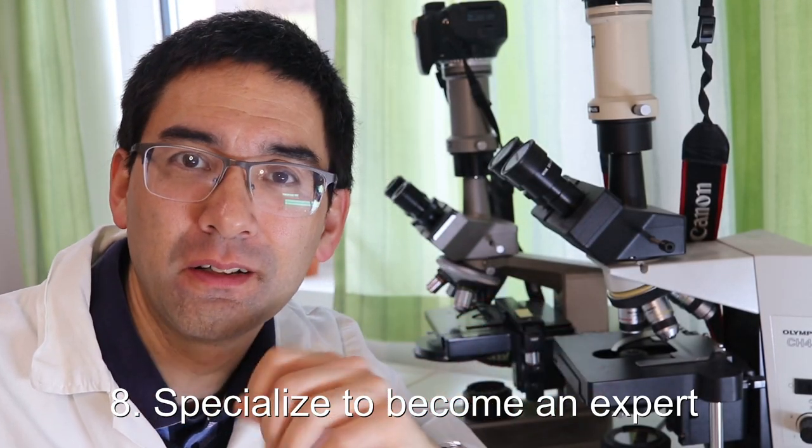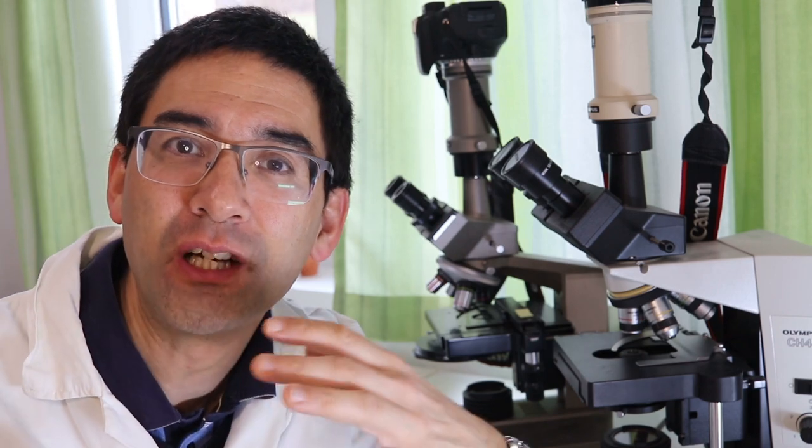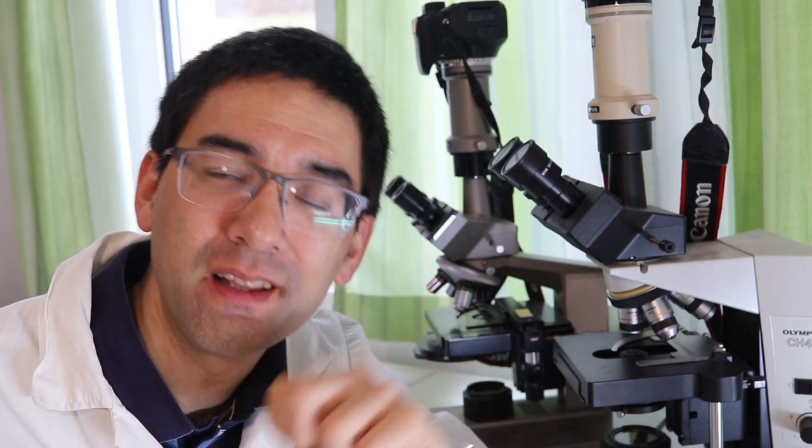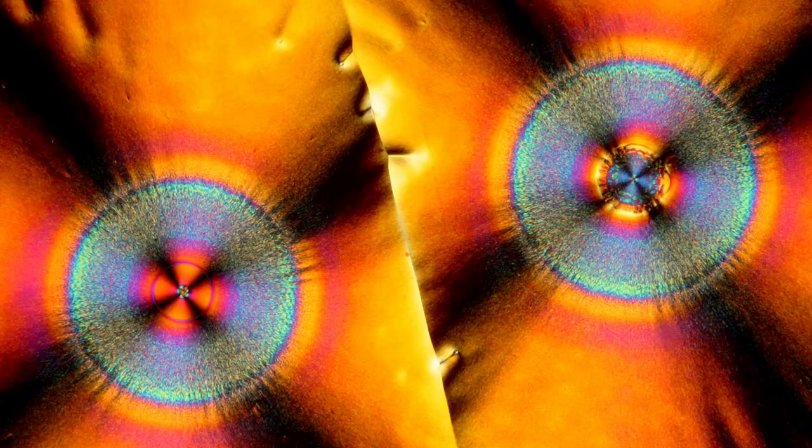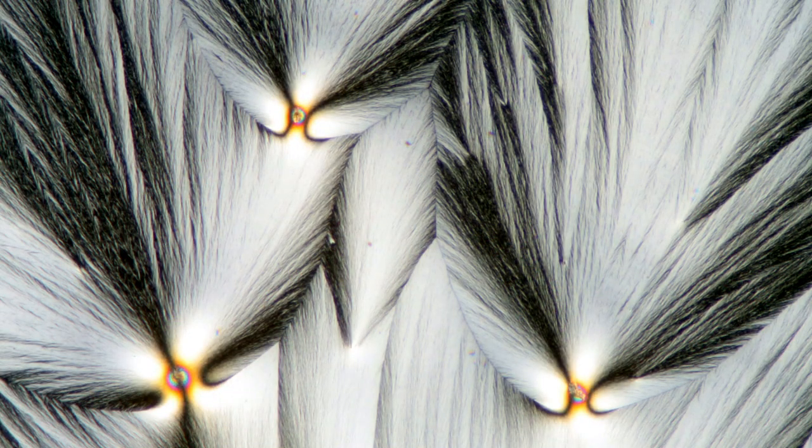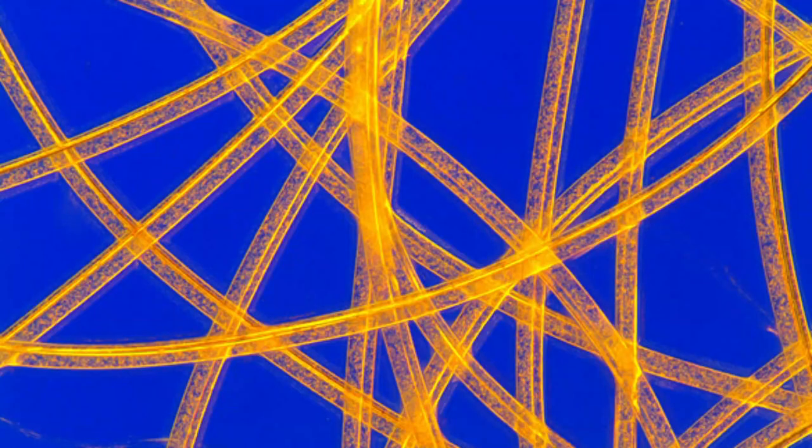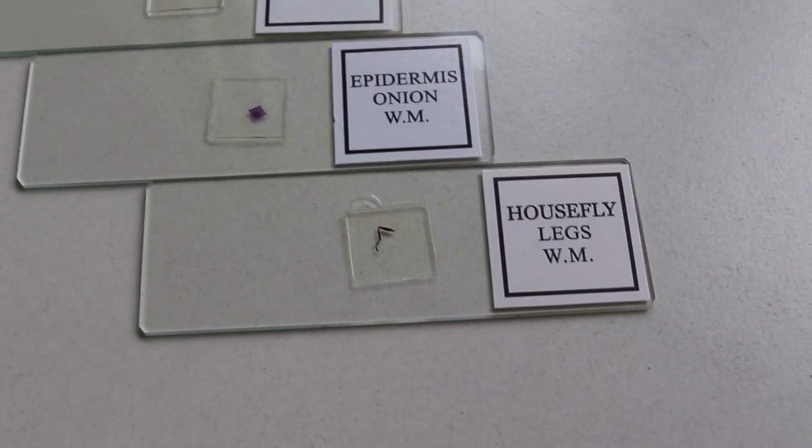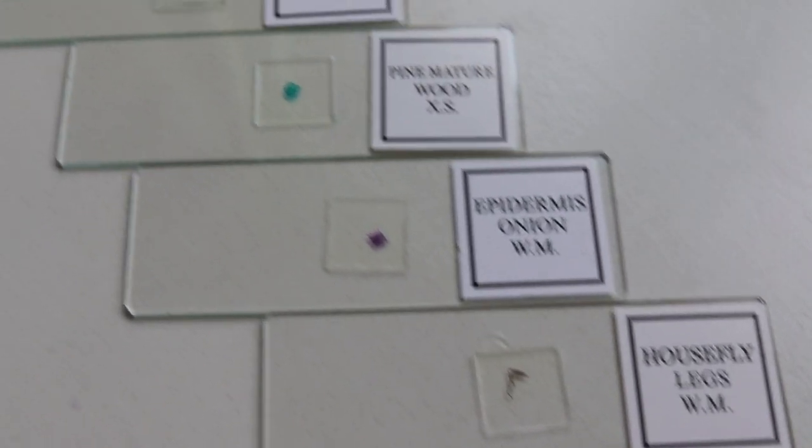If you want to, you can also become an expert in a certain field. For example, you can start to study foraminifera—these are little shells that you can find in sand samples. You can take it in a more artistic direction and make some micrographs using the microscope.